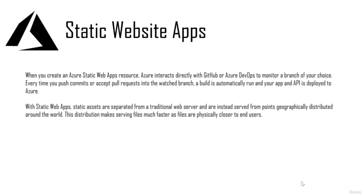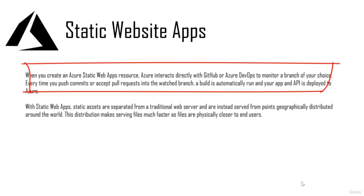In this section, we'll talk about creating a static web app. In our previous chapters, we had seen how using a storage account you could create a static website. However, that particular way had a few issues. The first issue was that it's not connected directly to a GitHub account, so if you need to make changes and redeploy, it has to be done manually. Static web apps are directly connected with GitHub or Azure DevOps to monitor a branch of your choice.